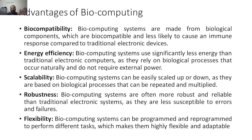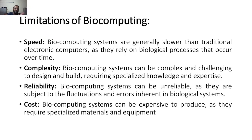Now the limitations. Speed is a limitation — bio computing systems are generally slower than traditional electronic computers, as they rely on biological processes that occur over time. Biological processes require a little time to perform, so speed is less. Complexity is another limitation — bio computing systems can be complex and challenging to design and build, as they involve biological components that need to be maintained and monitored properly, requiring specialized knowledge and expertise.